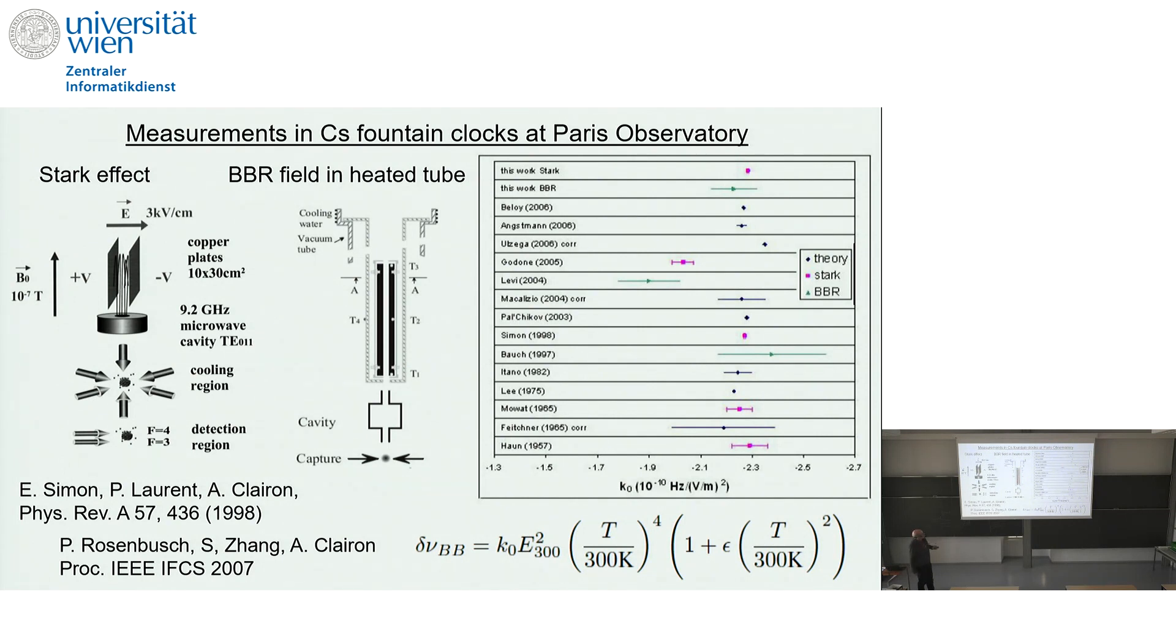And here you can see the results. So these were the first theoretical predictions, the first experimental result from PTB. And then the latest measurements here with the blackbody field and with the Stark. So the Stark coefficient is the one that provided the lowest experimental uncertainty. And so overall, this factor here in front of the sensitivity of the T to the 4 term is now known with a fraction of a percent uncertainty also to do this correction for the cesium clocks. So this is the state of the art for the cesium and it is the correction that is applied.